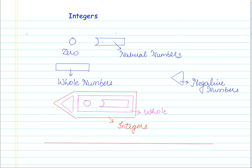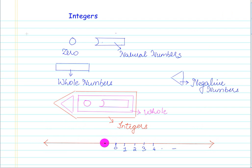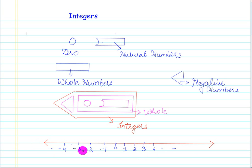We are already aware of the number line. We have a number line with numbers represented from 0, then 1, 2, 3, 4, and so forth, and here minus 1, minus 2, minus 3, minus 4 and so on. The numbers on the right hand side of zero are the positive integers or positive numbers, and the numbers on the left side of zero are negative integers, because this whole group itself is known as integers.